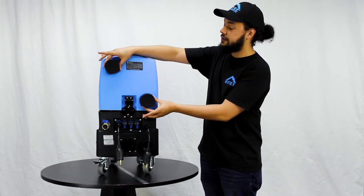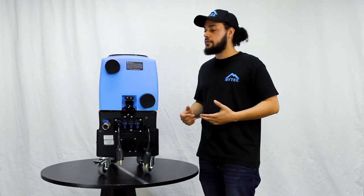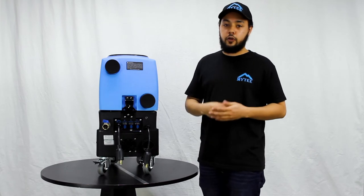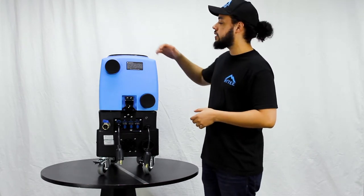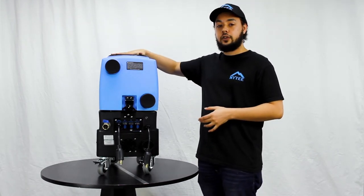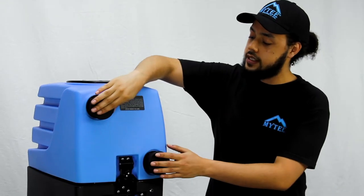You can see these two capped vacuum ports on the back of the machine. This is how you configure it for different uses. If I'm using it as a standalone extractor with the water hog, I'm going to have both of these capped.